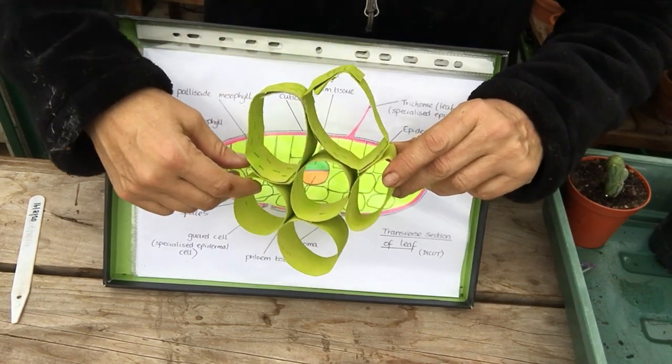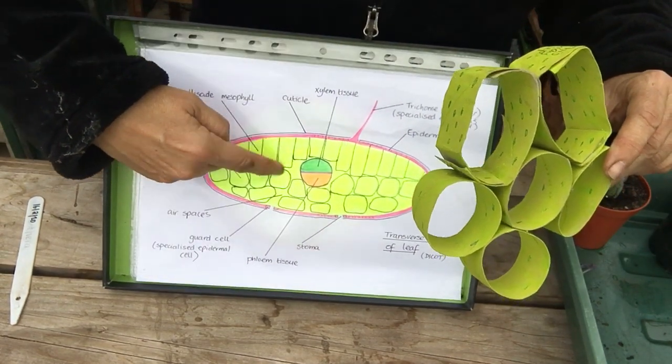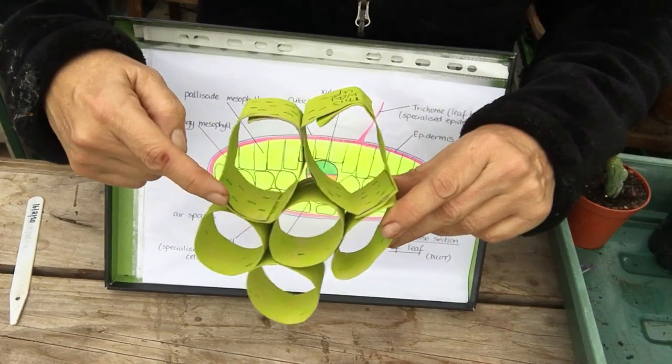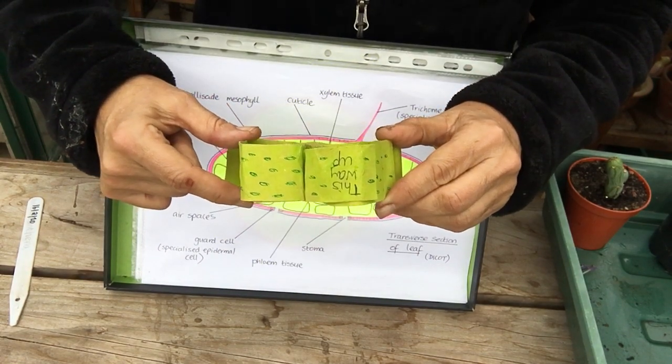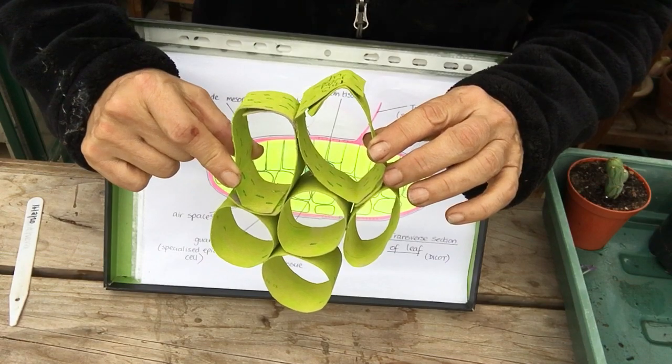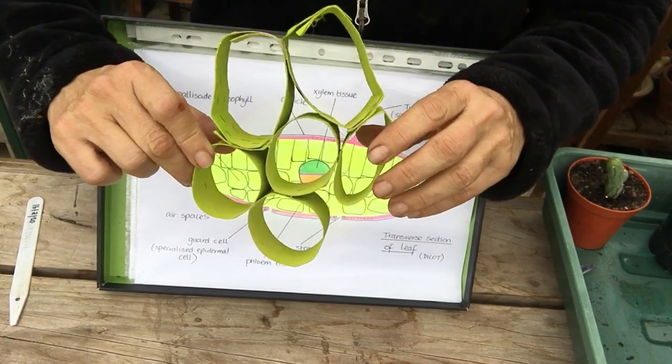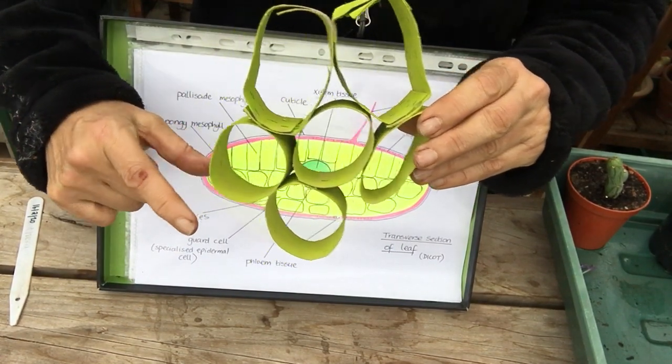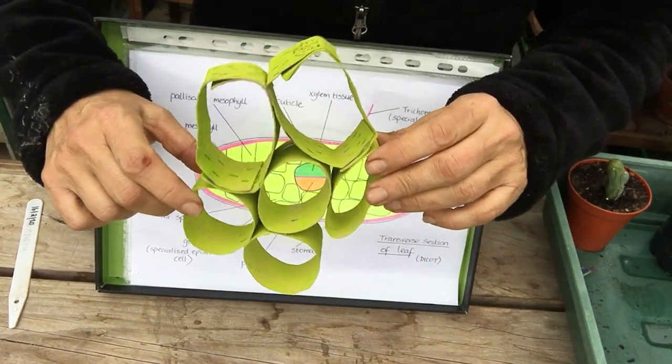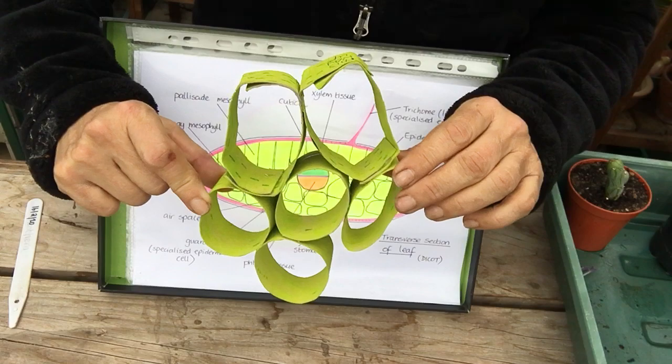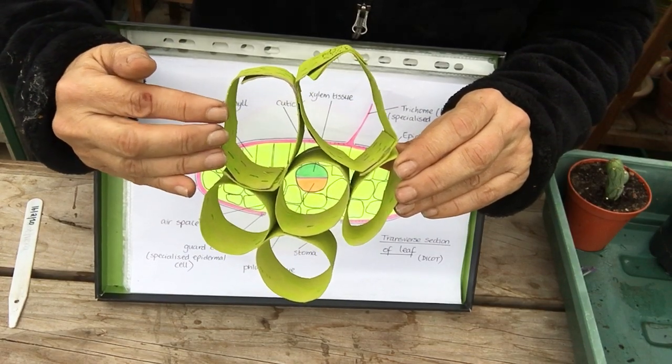This one represents parenchyma in the leaf. So these long ones represent the palisade mesophyll cells at the top of the leaf and this is where most of photosynthesis occurs because there's a lot of chloroplasts in the palisade mesophyll which are parenchyma cells. Below we go back to our more oval shaped large cells which are again parenchyma cells, but in the case of the leaf we call them the spongy mesophyll cells. So in the leaf we've got two different ways to describe the parenchyma cells: palisade mesophyll and spongy mesophyll cells. Obviously this is the main place where photosynthesis occurs.